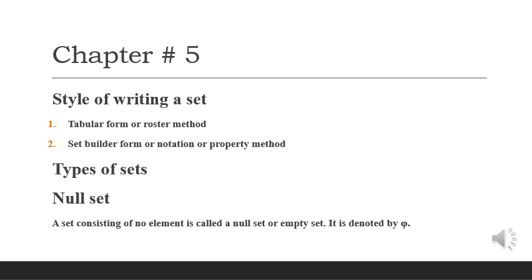These forms both have examples in your textbooks — if you open the book you can see all forms. The next topic is types of sets. There are different types: null set, singleton set, finite set, infinite set, subset, power set, product set, universal set, and Venn diagram.